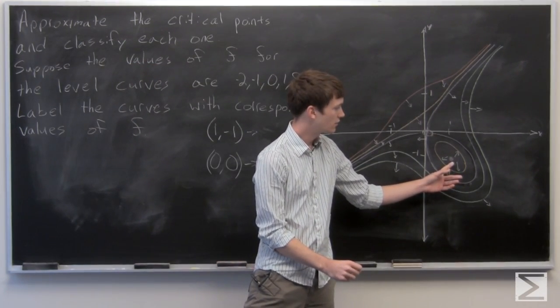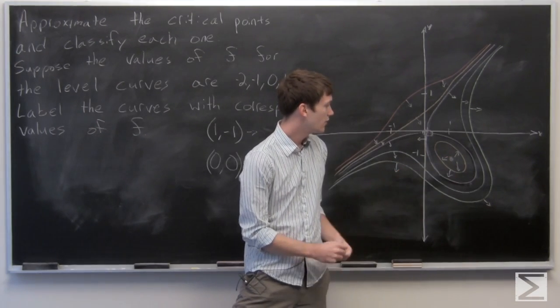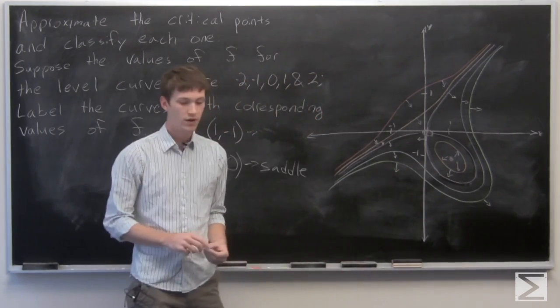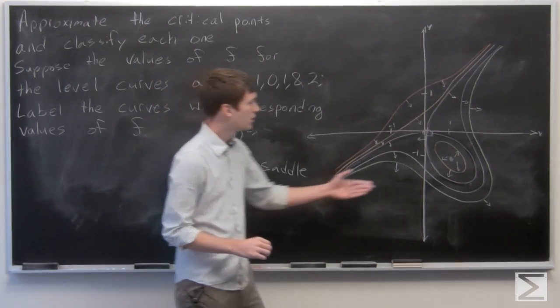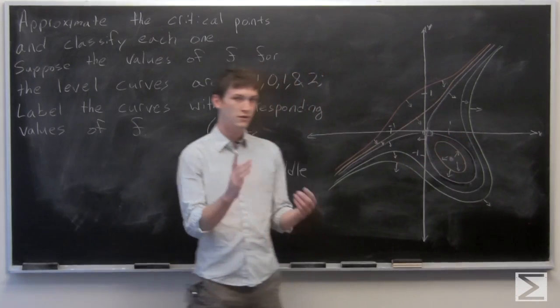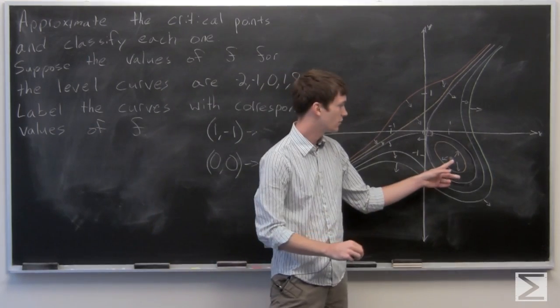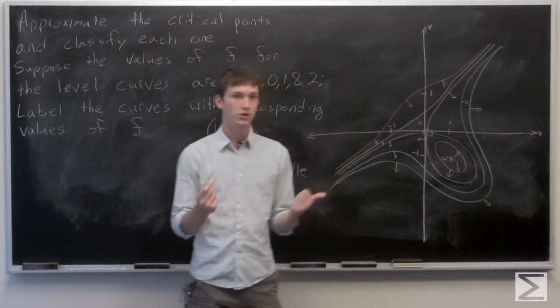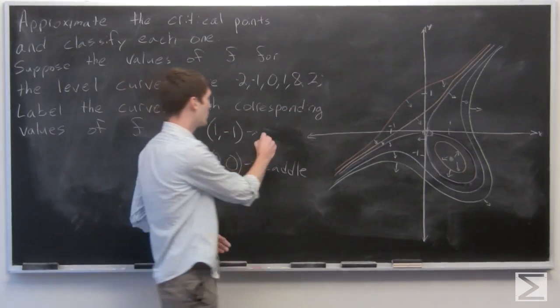And then we can look at the scaled gradient vectors to determine what kind of critical point 1, negative 1 is. Since the gradient vectors always point in the direction in which f increases, we see that we're going out of this point. So that means that no matter where you are at this critical point, any direction will be an increase. So that means that the point 1, negative 1 is a minimum.